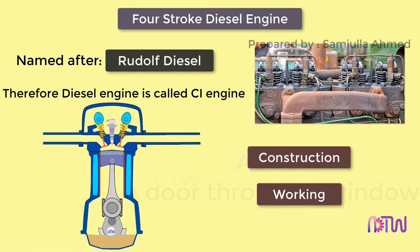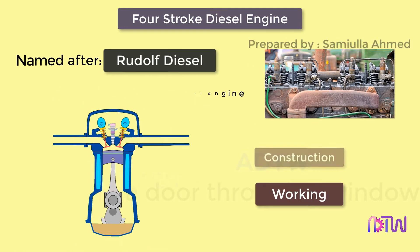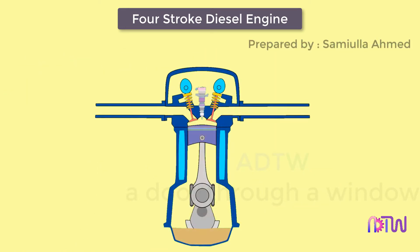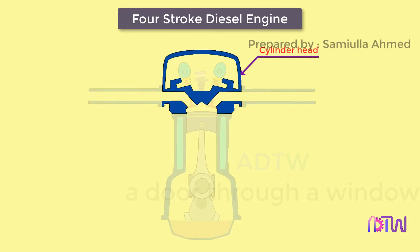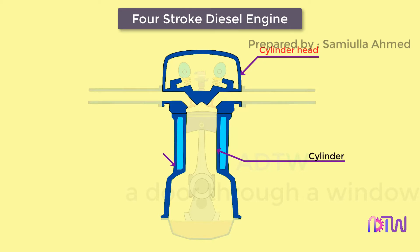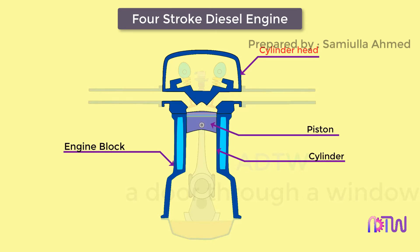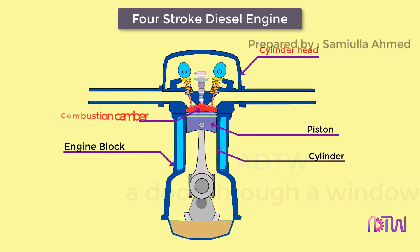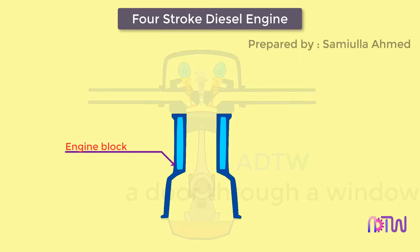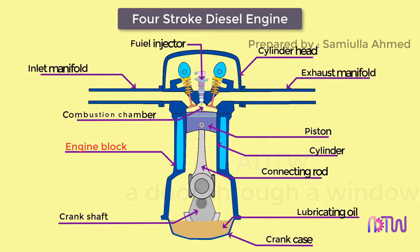Construction of the four-stroke diesel engine: the four-stroke diesel engine consists of the following parts. The cylinder head sits above the cylinders on top of the engine block; it closes the top of the cylinder, forming the combustion chamber. The engine block is the main supporting structure for the various components.